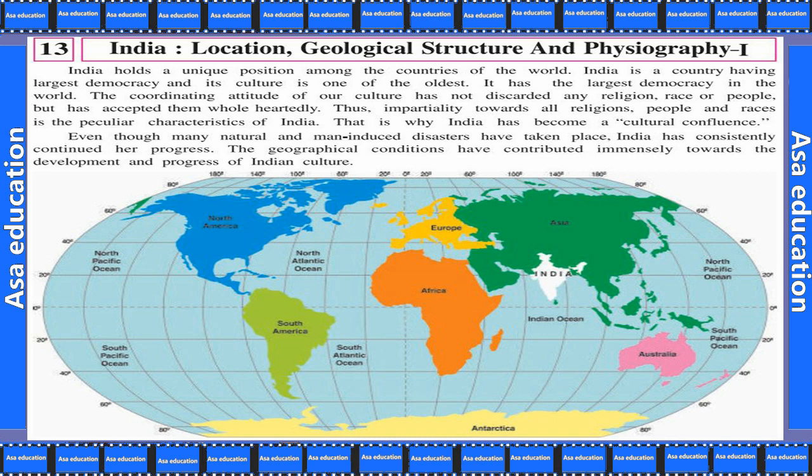This is why India has become a cultural influence — a Sanskritic zone in which all religions are included. Even though many natural and man-induced disasters have taken place, India has consistently continued her progress. India has been shaped as a culture, and its geographical conditions have contributed immensely towards the development and progress of Indian culture.